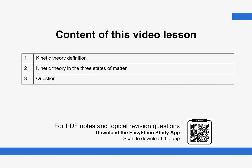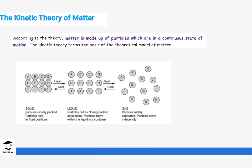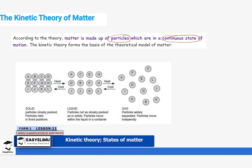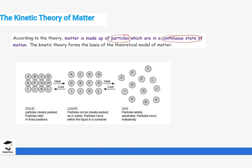Let us begin by defining what kinetic theory is. Kinetic theory states that matter is made up of particles and these particles are in a random, continuous state of motion. It means that these particles are always moving — they are not standing still, they are always in continuous random motion. When you look at the model of matter in regards to the kinetic theory, this is how kinetic theory explains solids, liquids, and gases.